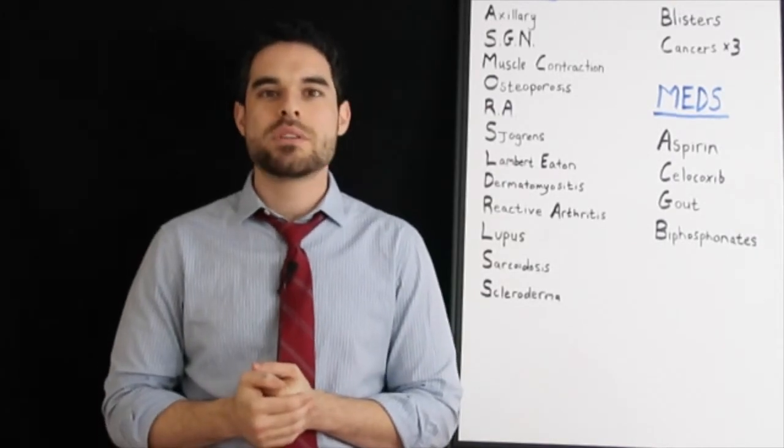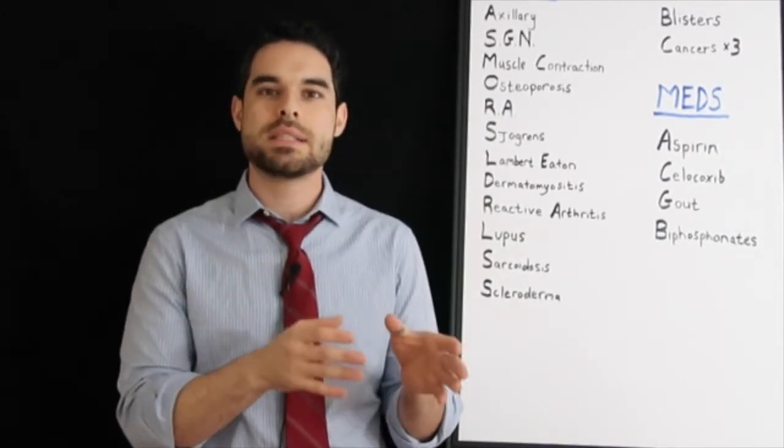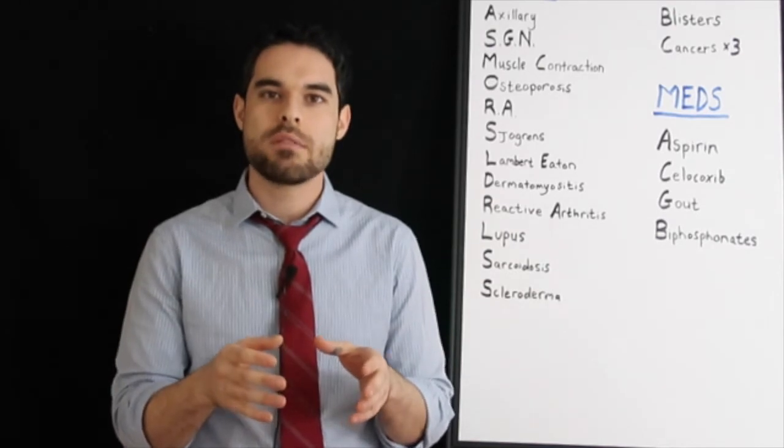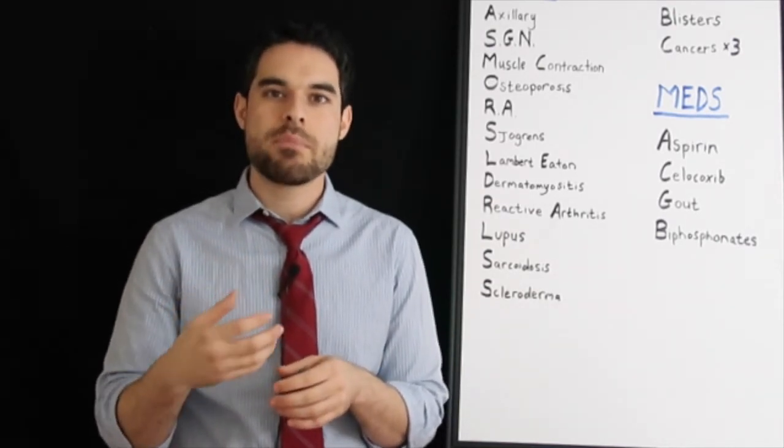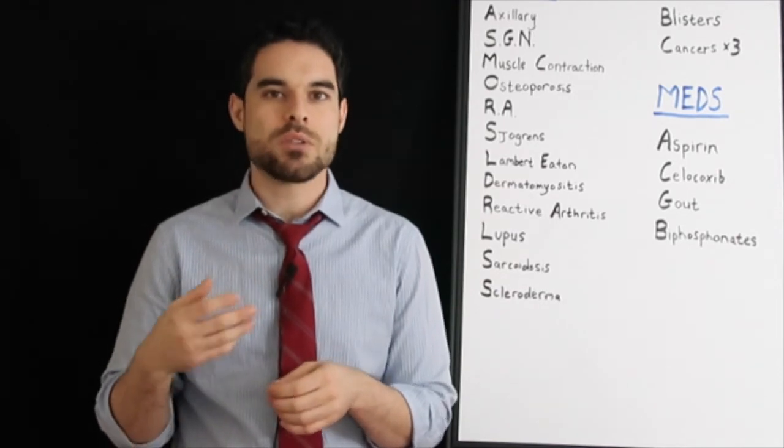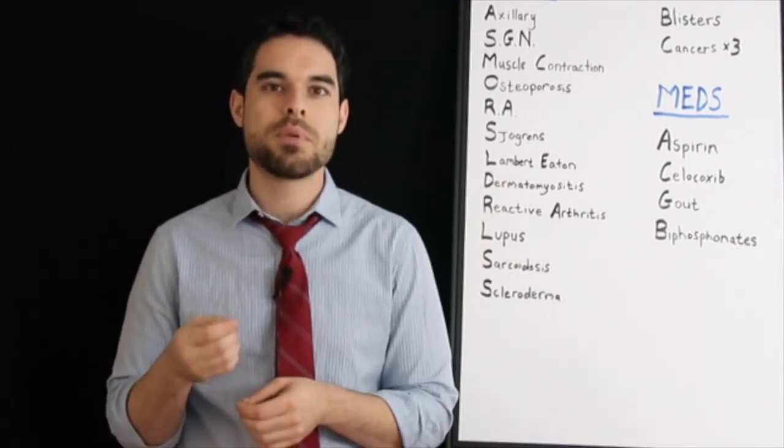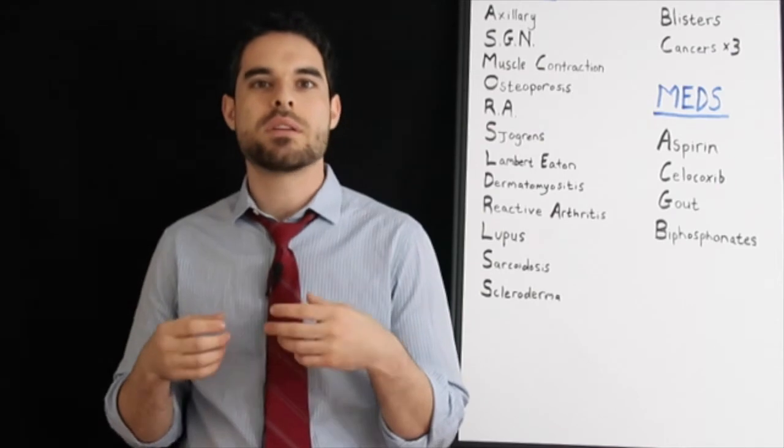Gout, important to know here, is that in an acute gout, you give either NSAIDs or colchicine. The MOA of colchicine is going to be to stabilize tubules, so you can't make microtubules, resulting in poor chemotaxis and poor white blood cell degranulation.